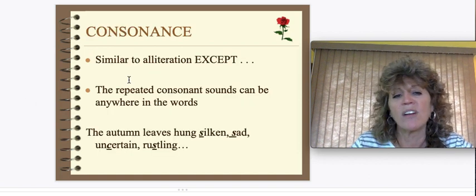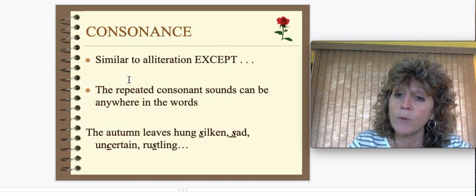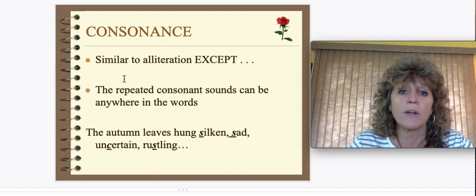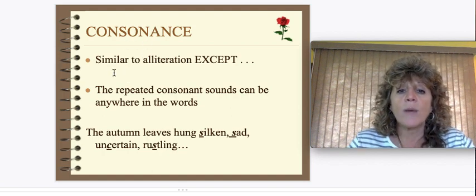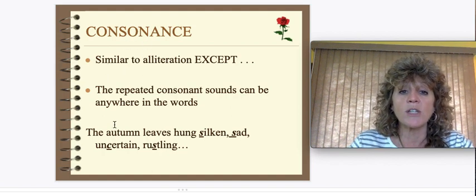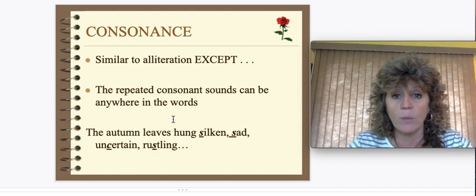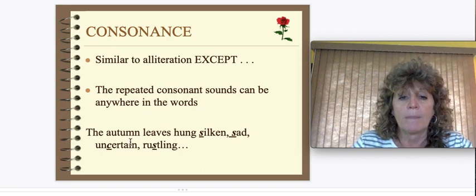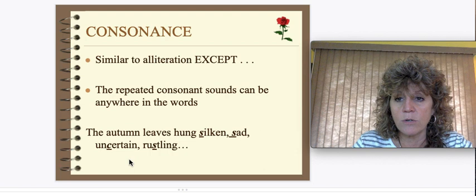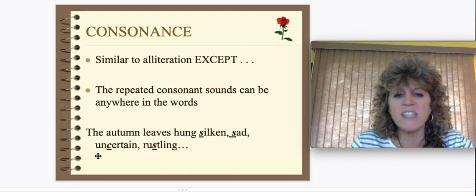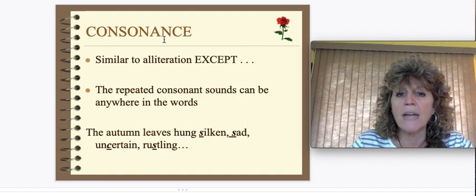Consonance is similar to alliteration, except the repeating consonant sounds can be anywhere in the words of the poem — not just at the beginning. Example: "The autumn leaves hung silken, sad, uncertain, rustling." We have all the S sounds going through that sentence. Consonance is when you repeat a consonant sound — remember, that's every letter except A, E, I, O, and U.